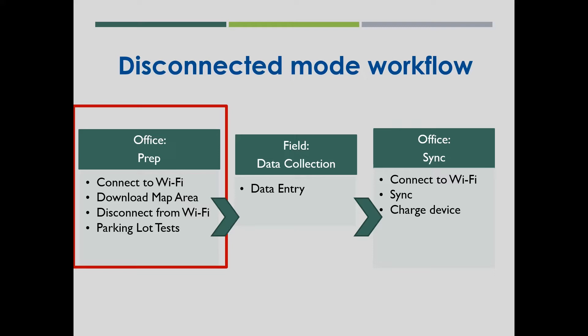Additionally, devices pinging the server while live and connected put unnecessary pressure and load on the server. Field Maps was specifically designed to operate in disconnected mode. The process involves office prep: while connected to reliable Wi-Fi, download a map area for the region you're collecting data in. Then disconnect from Wi-Fi, do the recommended parking lot tests from the user manual, head out to the field, collect data, then at the end of every day reconnect to Wi-Fi and synchronize.